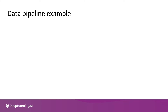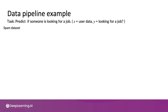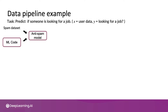Here's a more complex example of a data pipeline building on our previous example of using user records to predict if someone is looking for a job at a given moment in time. Let's say you start off with a spam dataset — this may include a list of known spam accounts, as well as features such as a list of blacklisted IP addresses that spammers are known to use. You might also implement a learning algorithm — a piece of machine learning code — and train your learning algorithm on the spam dataset, thus giving you an anti-spam model.